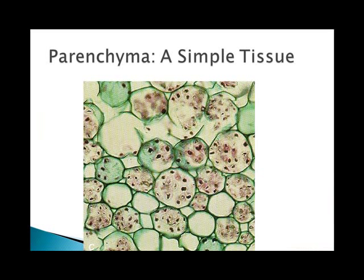Parenchyma makes up most of the soft, moist, primary growth of plants. Its thin-walled, pliable cells stay alive and retain the capacity to divide. Various types of parenchyma participate in photosynthesis and form the mesophyll. They also participate in storage, secretion, and other tasks. Its cells are metabolically active at maturity and retain the capacity to divide, as in wound healing for a plant.